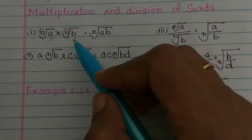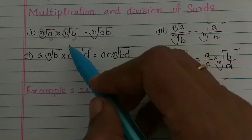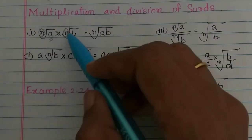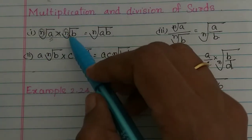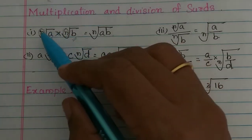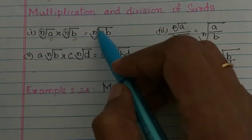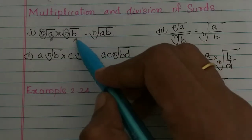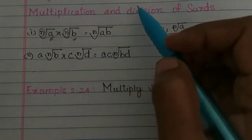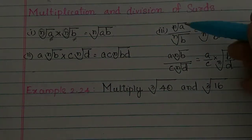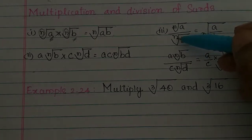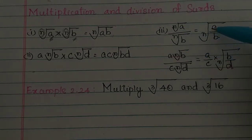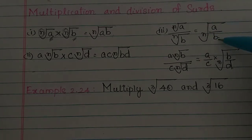The multiplication rule applies when the order is equal — the indices must match. The result is the nth root of the common radicand. In division, if you have n√a divided by n√b, we can divide the radicals to get n√(a/b).